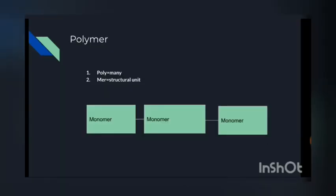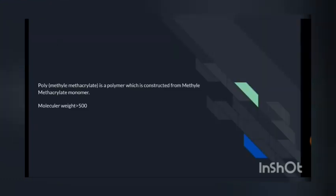At first we'll discuss about polymer. In the word polymer we have two segments: 'poly' and 'mer'. The meaning of poly is equal to many, and the meaning of mer is equal to structural unit. When the number of mer is only one, that is called monomer. Basically, monomer is from which polymer is constructed — various numbers combine and it creates the polymer. Like polymethylmethacrylate is a polymer which is constructed from methylmethacrylate monomer, and its molecular weight is more than 500.